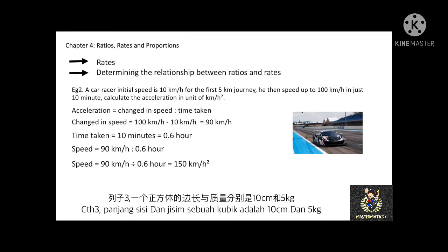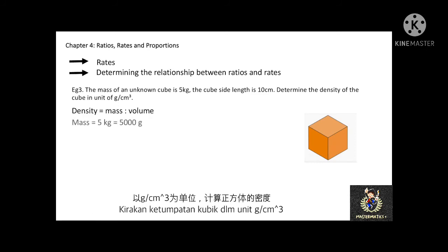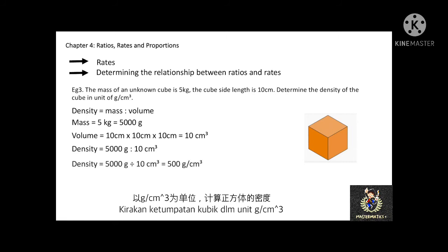Example 3: The mass of an unknown cube is 5 kg. The cube's side length is 10 cm. Determine the density in grams per cubic centimeter. The ratio of density is mass to volume. The mass is 5 kg, multiplied by 1000 to give 5000 grams. The volume is 10 cm × 10 cm × 10 cm, which equals 1000 cubic cm. Therefore, density equals 5000 grams divided by 1000 cubic cm, giving 5 grams per cubic centimeter.